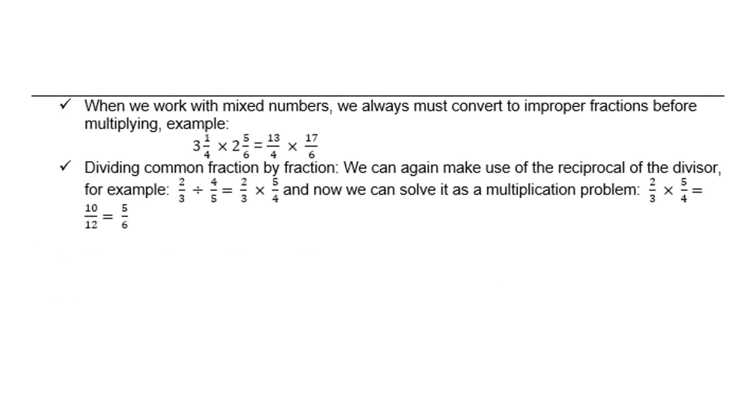When we work with mixed numbers, we always must convert to an improper fraction before multiplying. Example: three and a quarter times two and five over six. Three and a quarter is three times four plus one, thirteen over four, and two times six plus five is seventeen over six, and then only can we take it further.